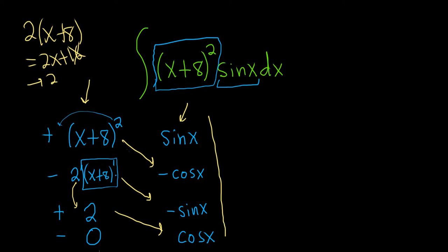So we just multiply now. Following the first arrow, we get negative cosine x. I'm going to put the negative out front. So negative (x+8)^2 cosine x.